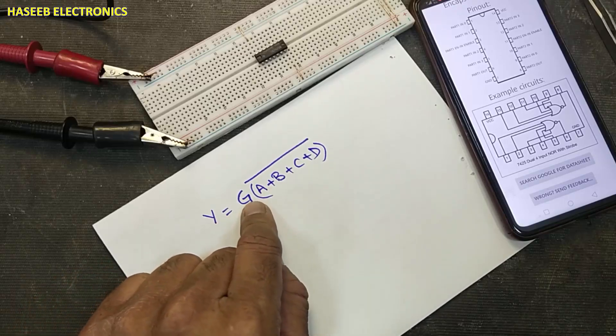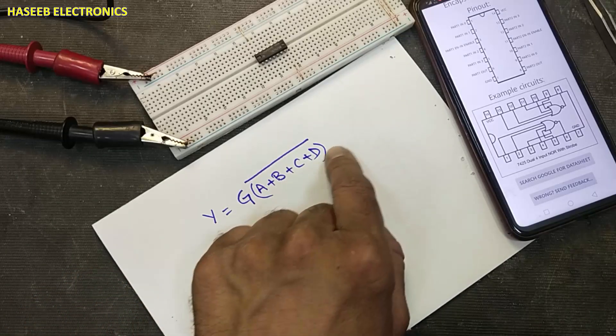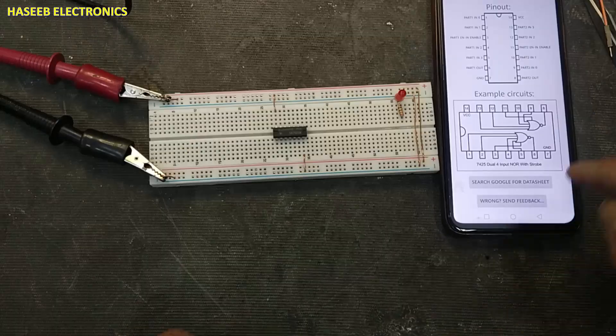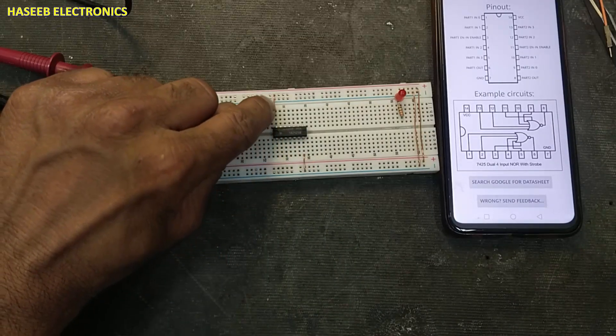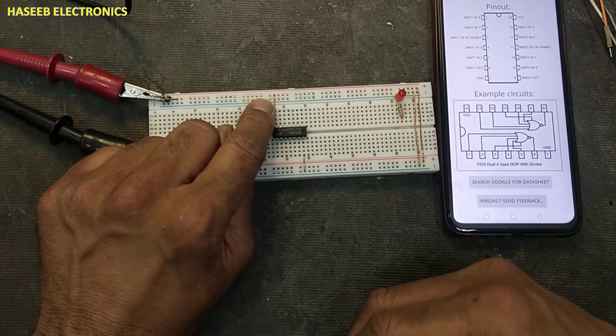And these are conditioned with strobe pin or gate pin. If gate pin is enabled, that time it will provide NOR function. Pin number 7 grounded.